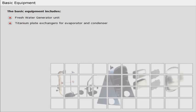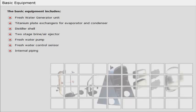The basic equipment includes fresh water generator unit, titanium plate exchangers for evaporator and condenser, distiller shell, two-stage brine air ejector, fresh water pump, fresh water control sensor, and internal piping.